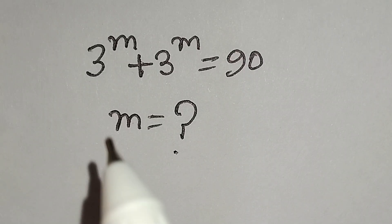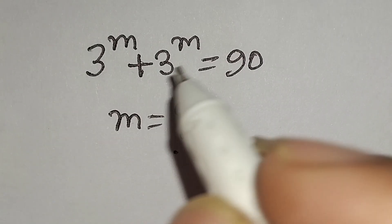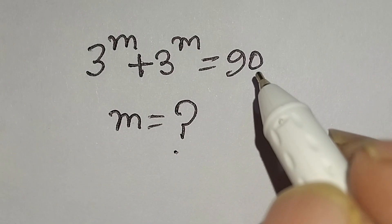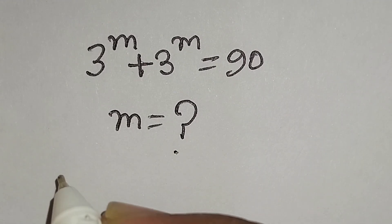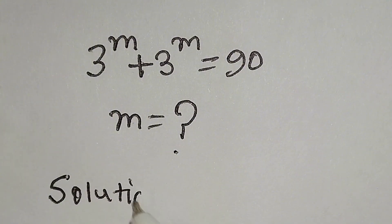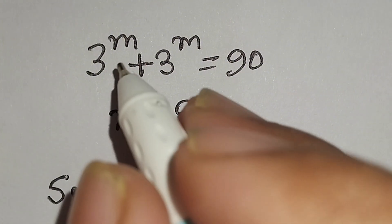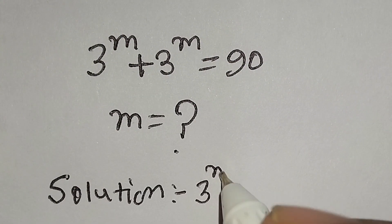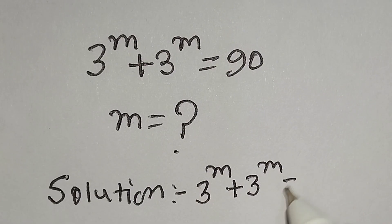Hello, this is a nice math problem. 3 to the power m plus 3 to the power m is equal to 90, and we have to find the value of m. So let's start the solution. The given equation is 3 to the power m plus 3 to the power m is equal to 90.